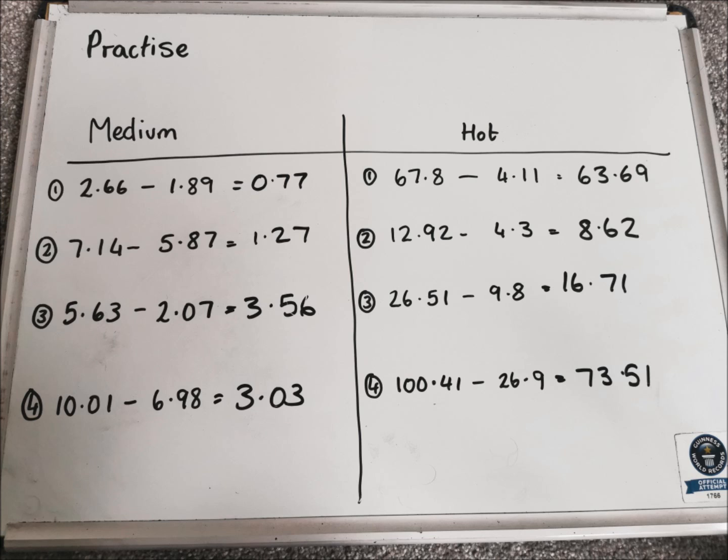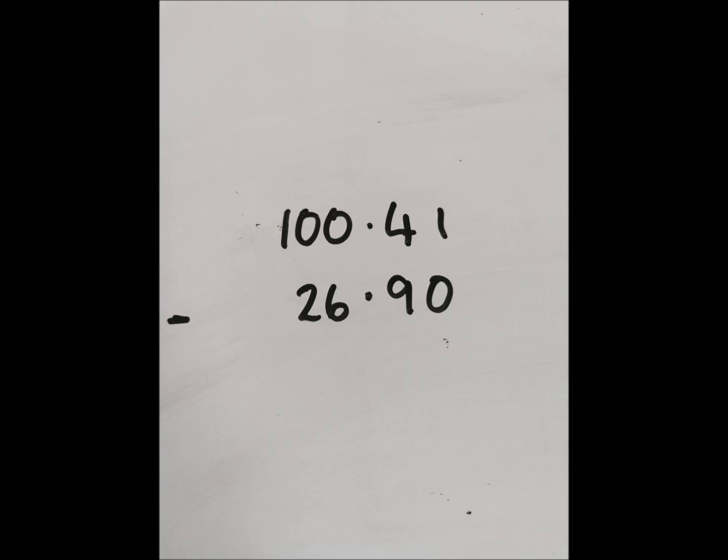And again, I want to have a look at that last one in a bit more detail. So, we have 100.41 take away 26.9. We can add that 0 on at the end if that helps us.